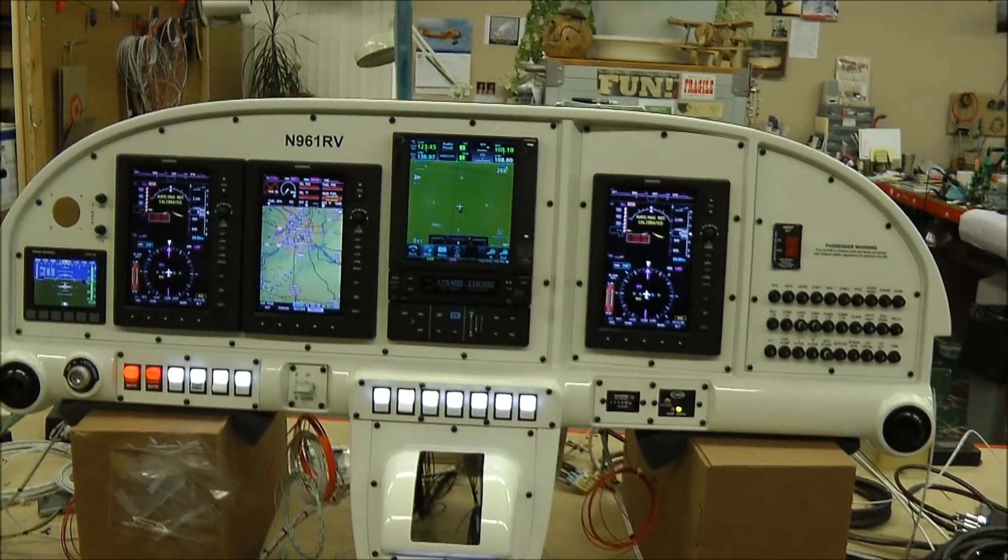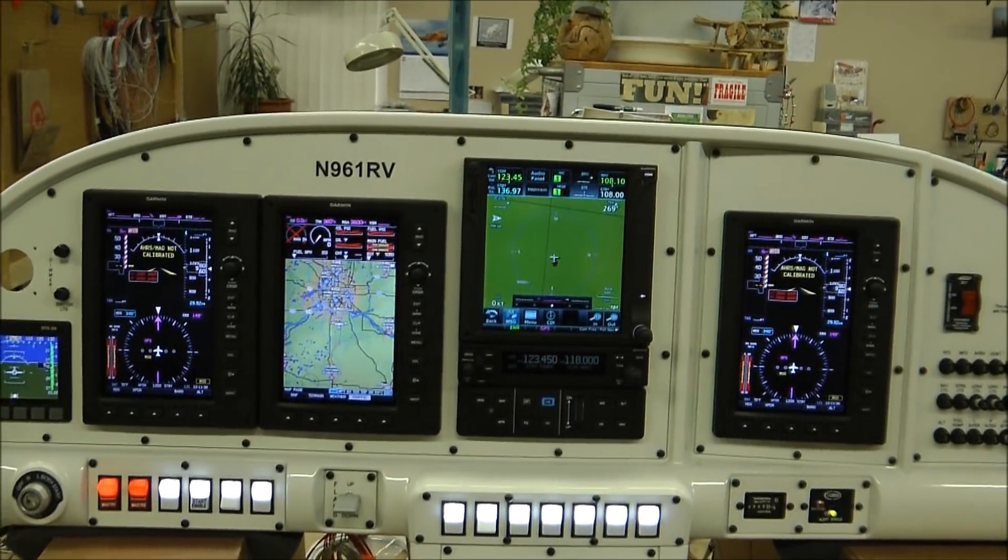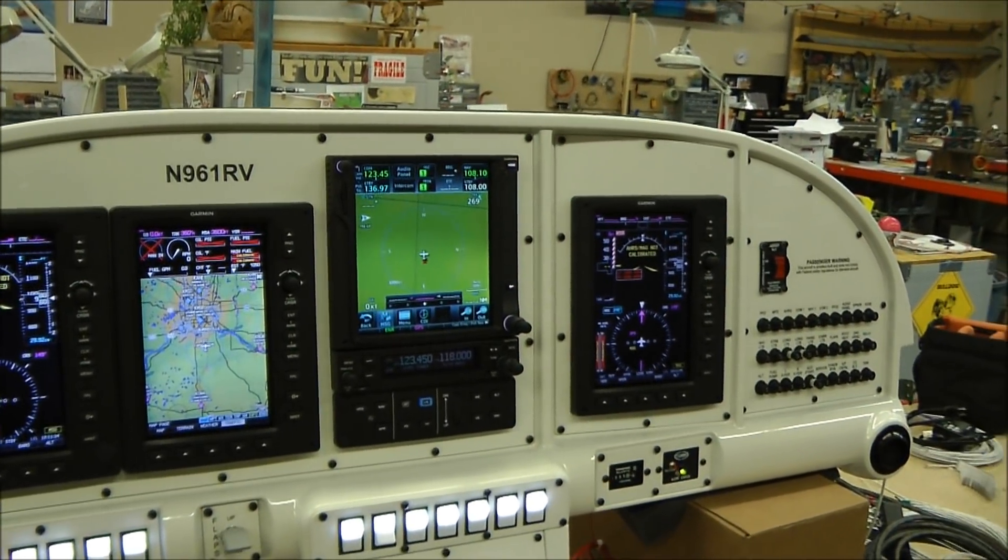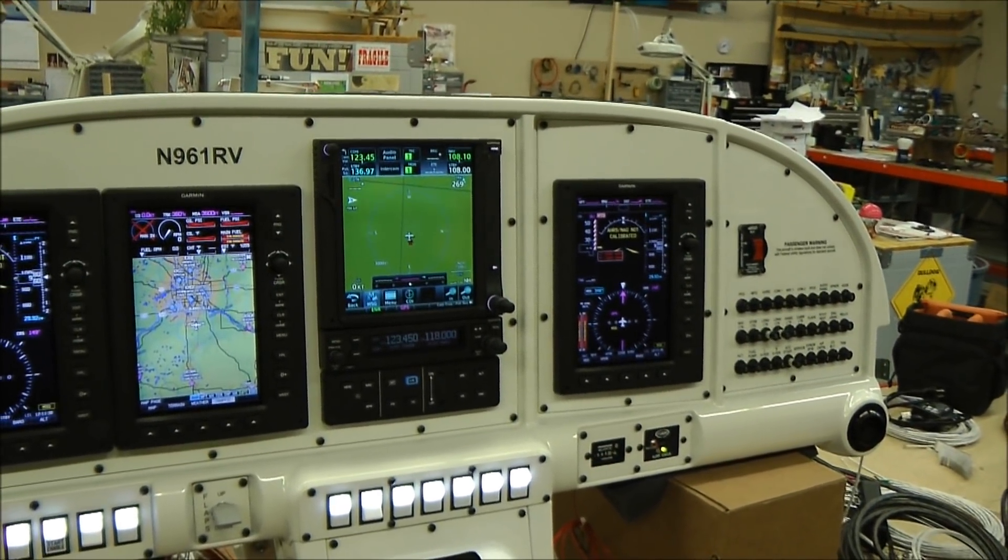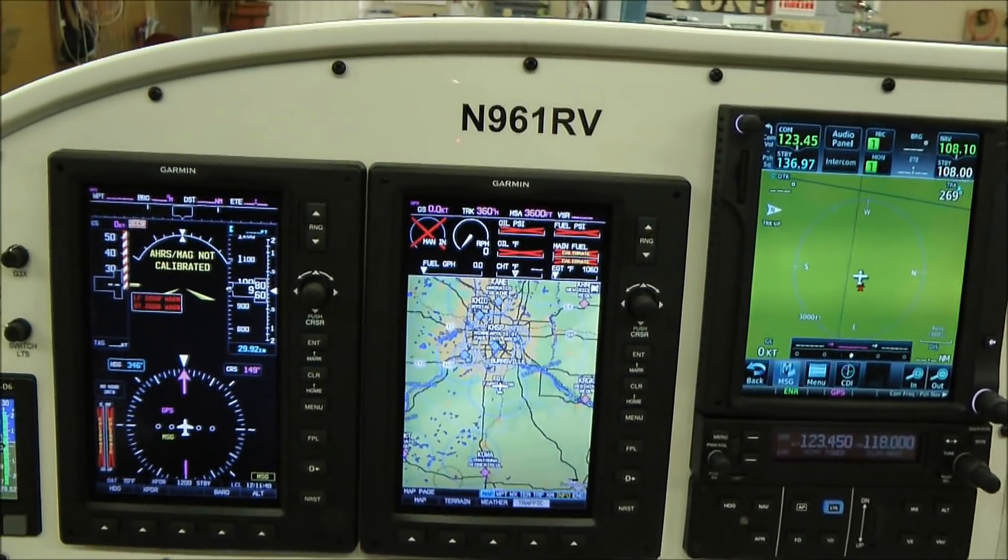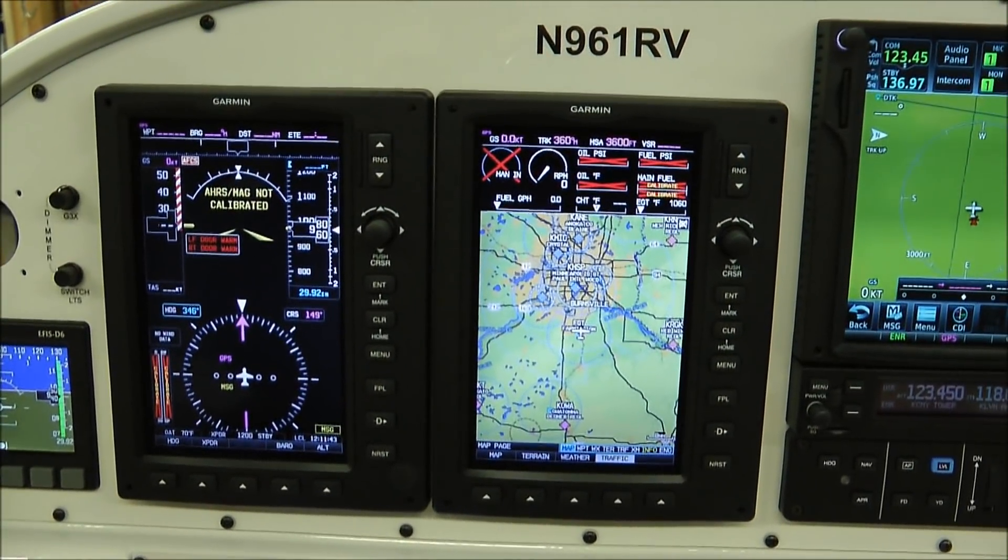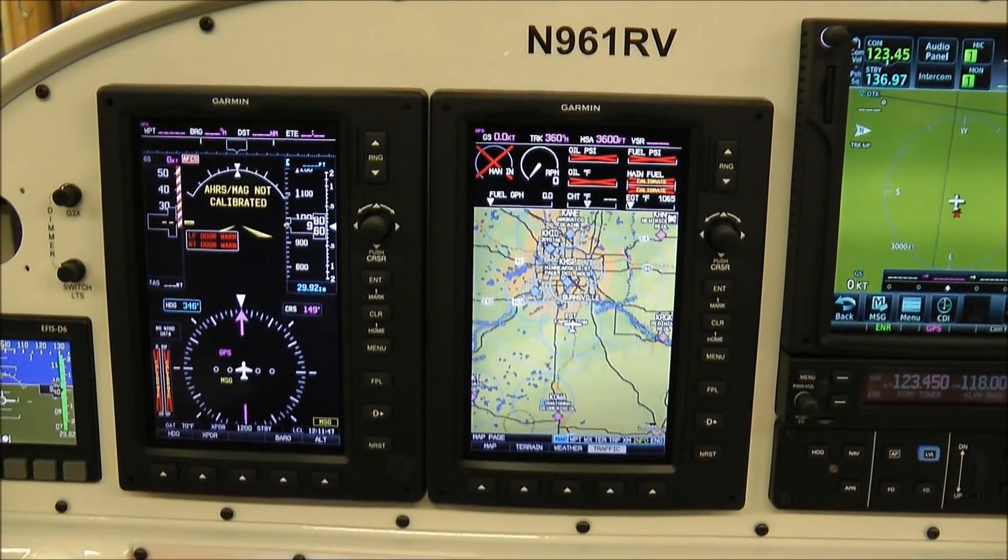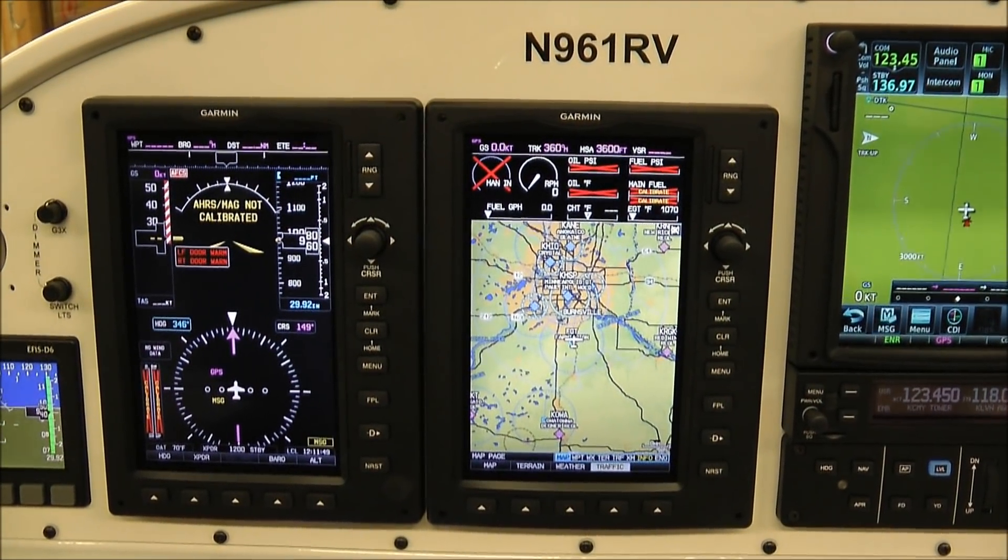Looking at this panel, obviously it's a G3X system, the smaller screens, not the newer or larger screens. When you hear the word DU or GDU or display unit, that's what we're talking about. These display units right here. They come in and out of the panel. It can be one or two or multiples. Different manufacturers call them different things. For Garmin, they use GDU, which stands for Garmin Display Unit.